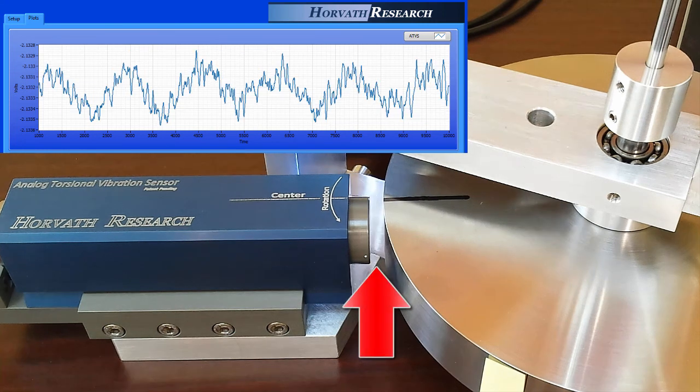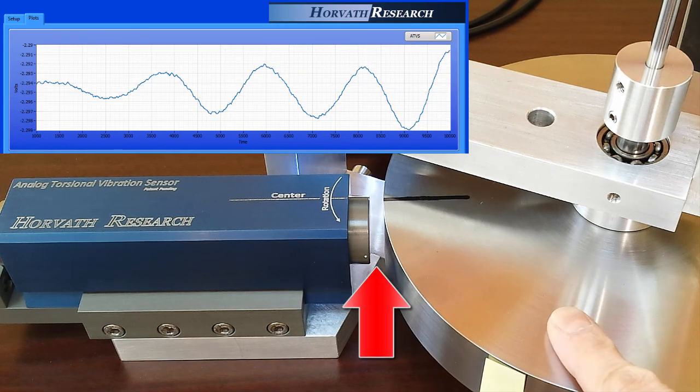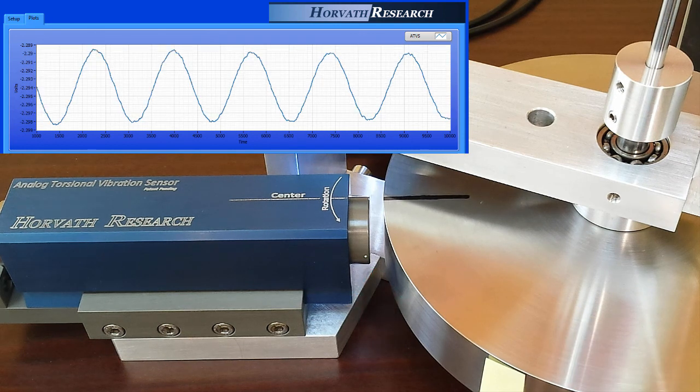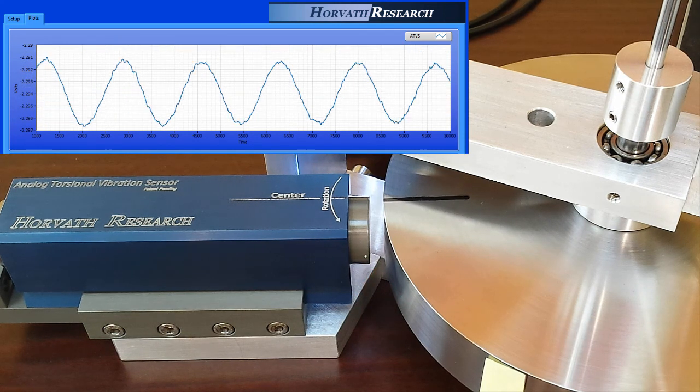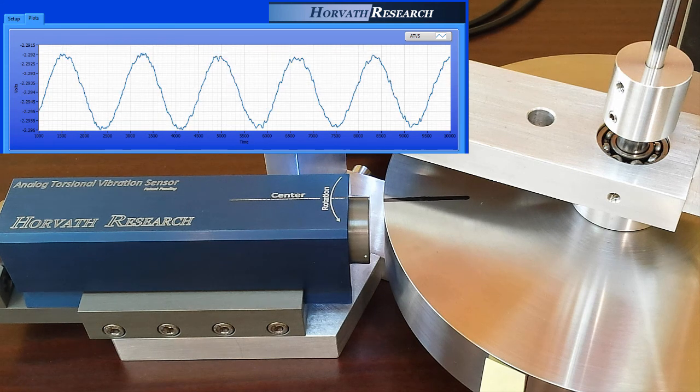In the final test, the air gap is set to 250 mil, 1 quarter of an inch, or 6.35 millimeters. The analog torsional vibration sensor still provides usable signal.